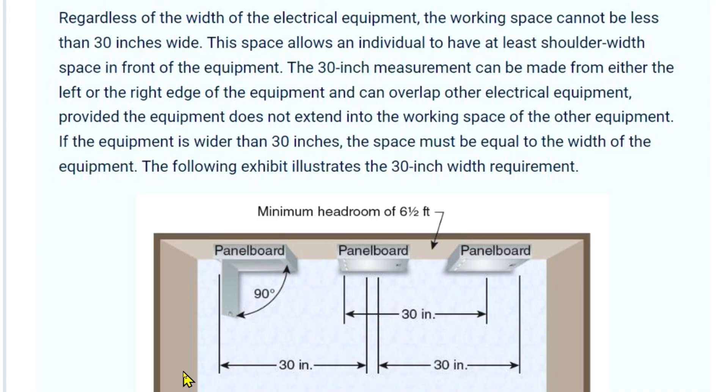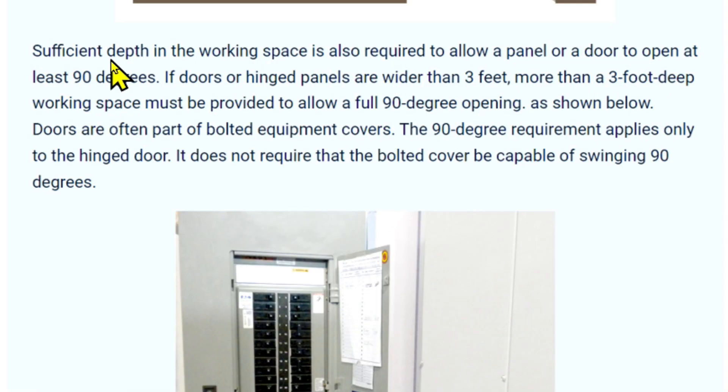So here you have a panel board and it has to have 30 inches. The door must be able to open 90 degrees. Now this could overlap under this panel board, and this could be 30 inches, and then this needs to be 30 inches. And then minimum headroom of 6 and a half feet.